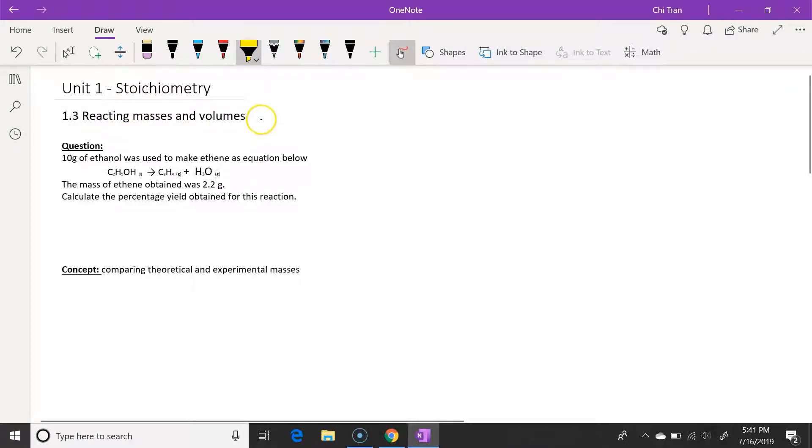This video is about reacting masses and volumes. In the question, it is given that there is 10 grams of ethanol and the mass of ethene obtained was 2.2 grams. The question is asking us to calculate percentage yield.